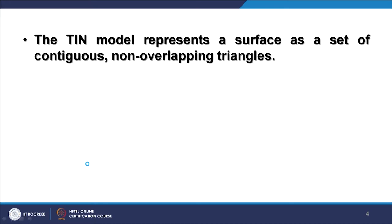The TIN model represents a surface or terrain as a set of contiguous, non-overlapping triangles — meaning there is no gap. Continuously, one triangle ends and another starts, the same as in raster where there is no gap between two pixels. Each triangle is represented by a plane or facet. Within that facet, you may have some variation in slope information, and the aspect would be fixed for that facet, which we will see soon.